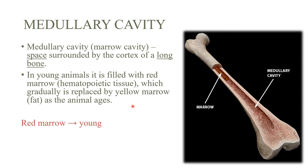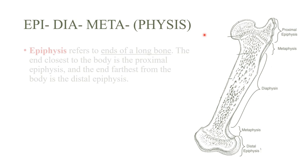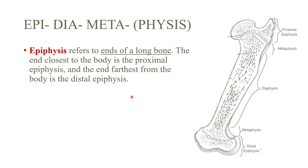Now we'll talk about the epiphysis, diaphysis, and metaphysis. The epiphysis refers to both ends of the bone. The end closest to the body is the proximal epiphysis, and the one distant from the body is the distal epiphysis. These are the ends of the long bone.